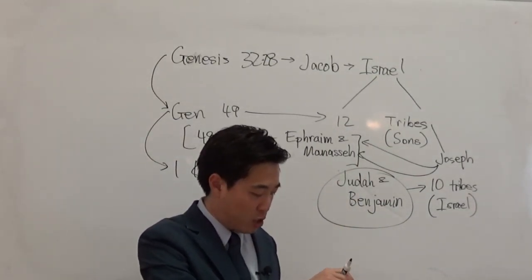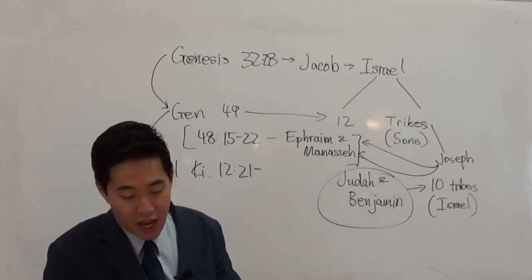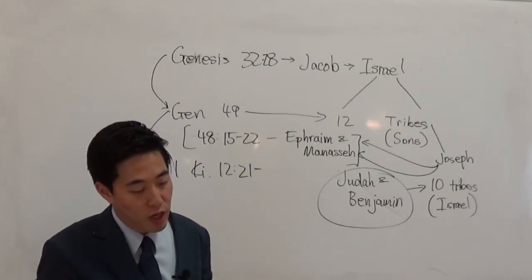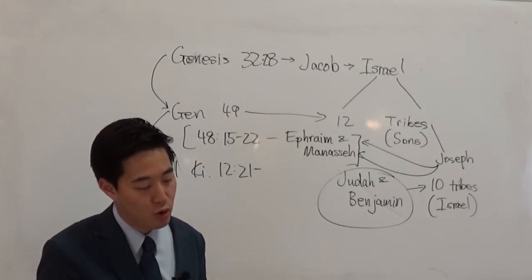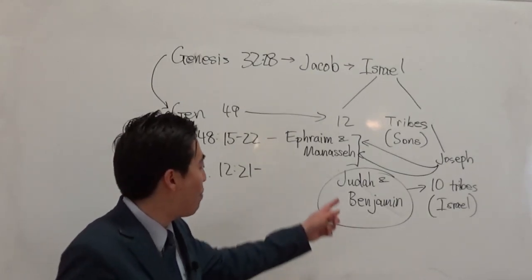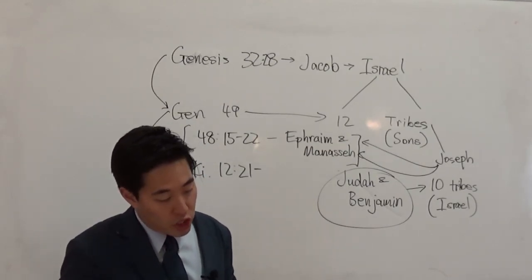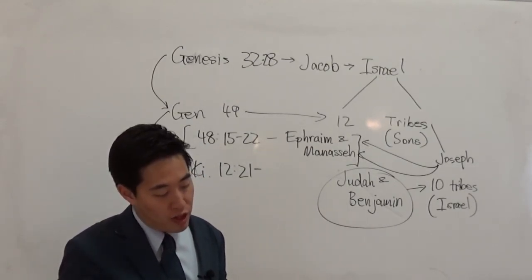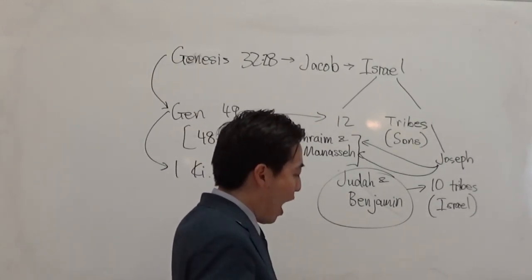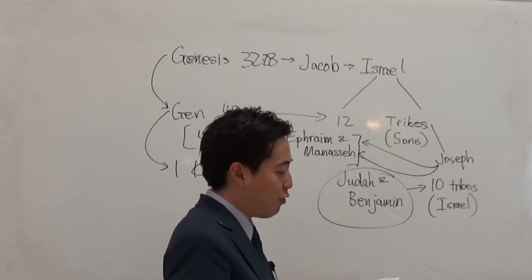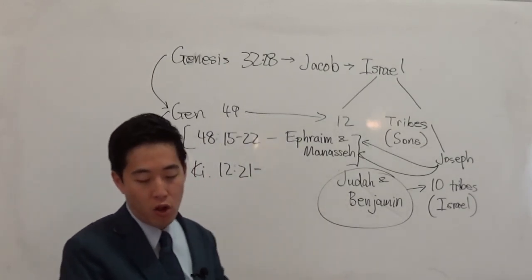The goal was to bring the kingdom back to Rehoboam, son of Solomon, but the word of God came through Shemaiah, telling Rehoboam, Judah, Benjamin, and the remnant of the people not to fight against their brethren Israel.